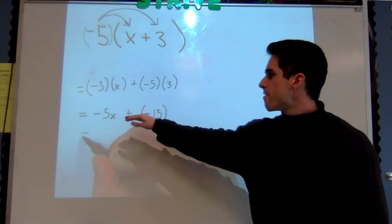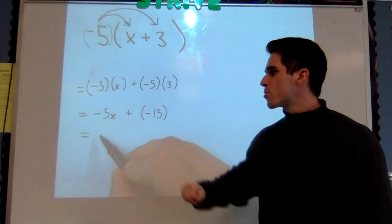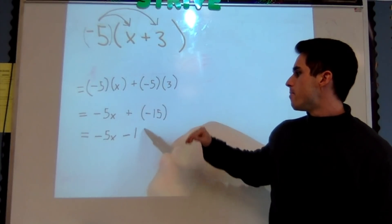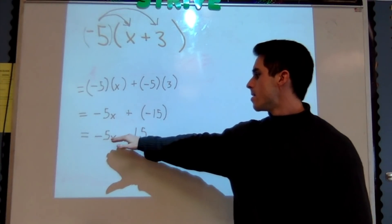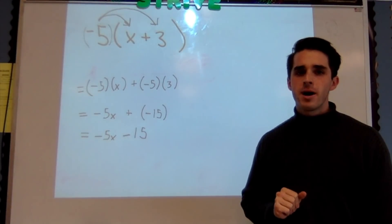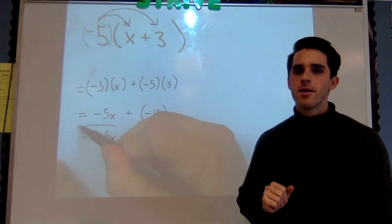Well we also know when we have plus a negative number, we can rewrite this again as subtraction of a positive. So I'm just going to write -5x - 15 as my final answer. And remember to box that bad boy. Thank you Feingold for doing that.